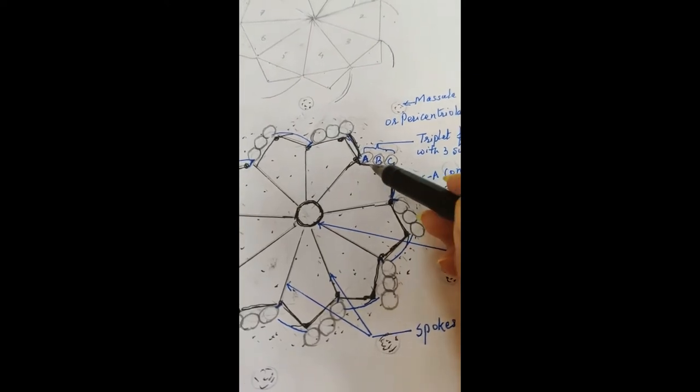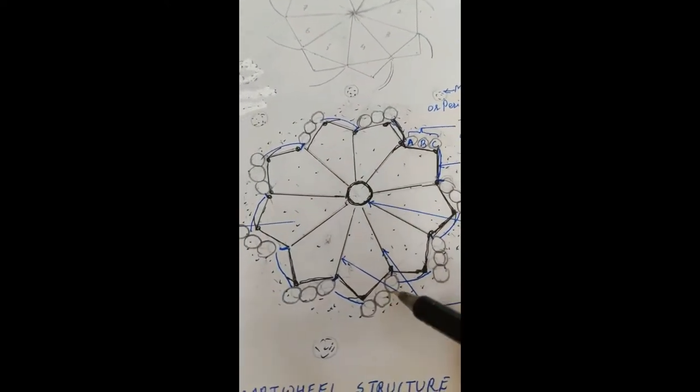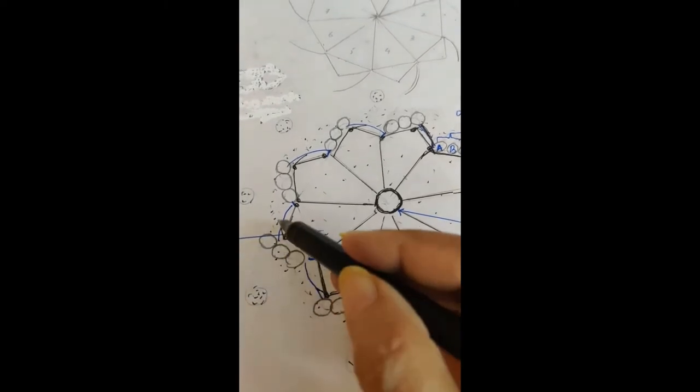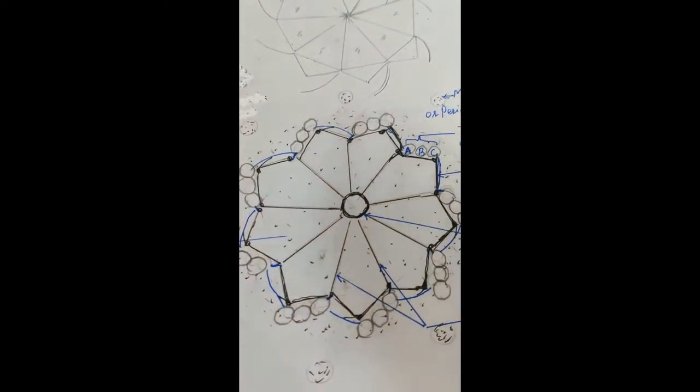So you are making A, B, C, 3, 3 sub fibers. So they are called triplets. So we have got 9 triplets.